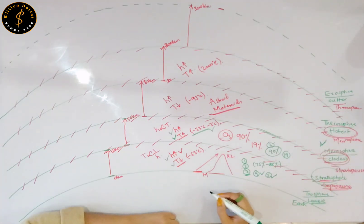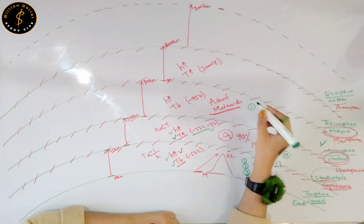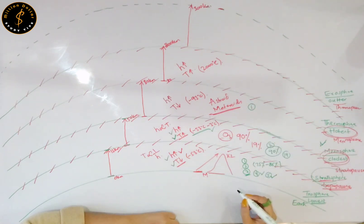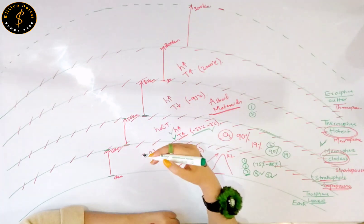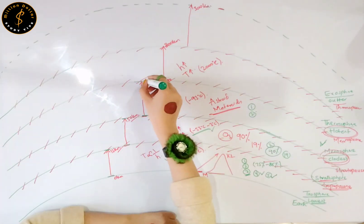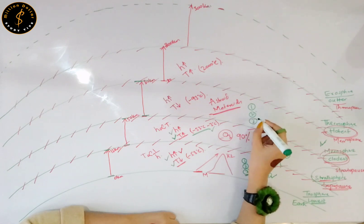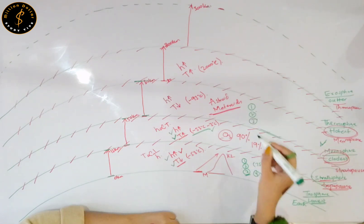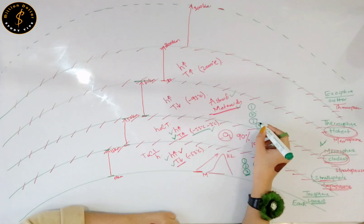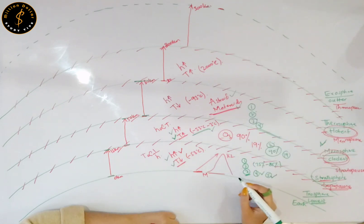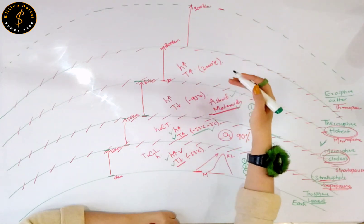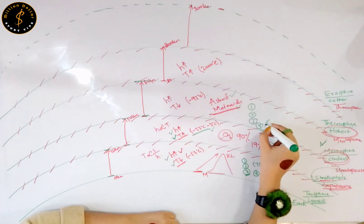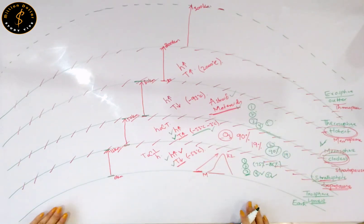The mesosphere is the coldest layer of your planet Earth and is the middle layer. Mesosphere starts from 50 kilometers above the surface of planet Earth and goes up to 80 kilometers. Your asteroids and meteorites occur in your mesosphere. The transition zone between your mesosphere and your thermosphere is known as your mesopause.